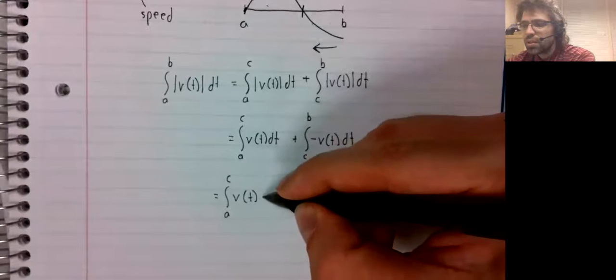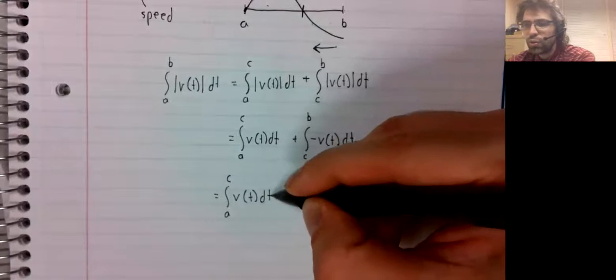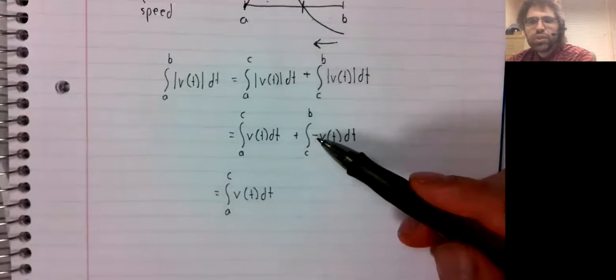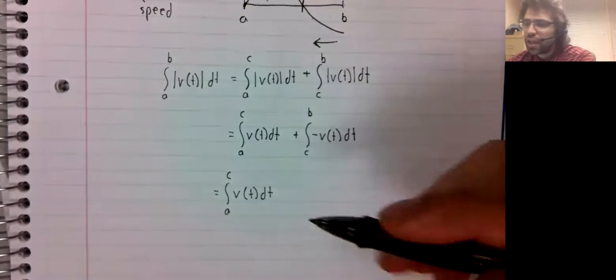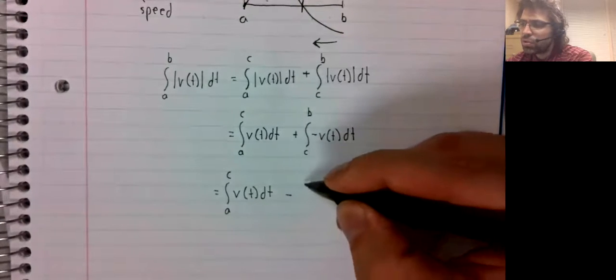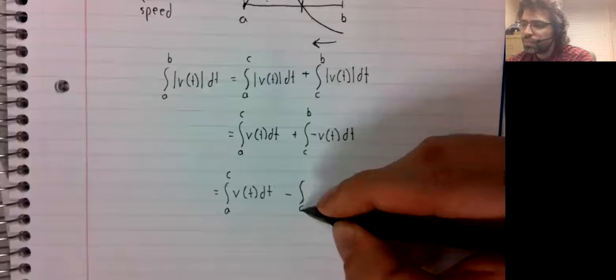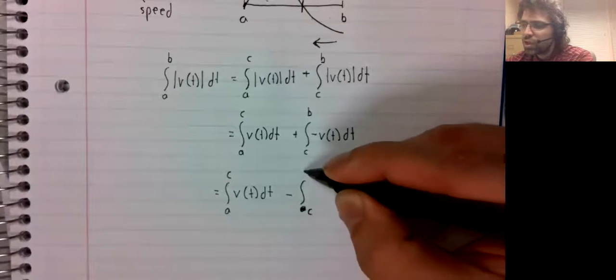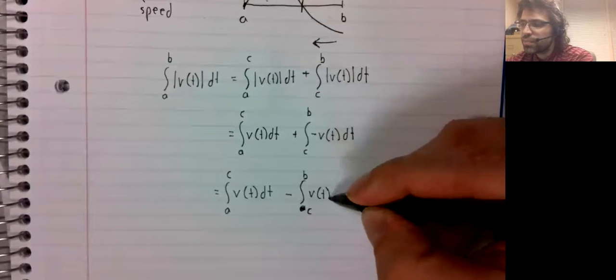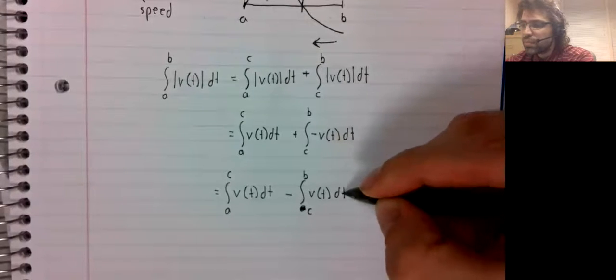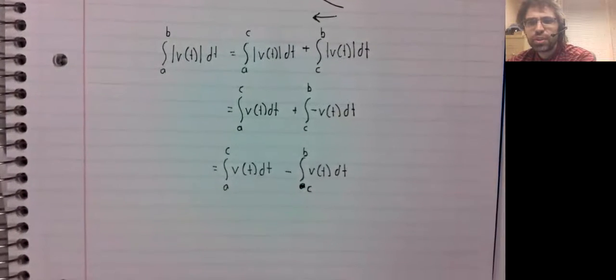So this integral, and now linearity tells us this negative sign can come out, so minus this integral.